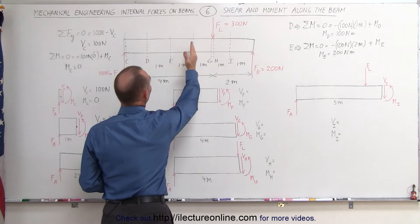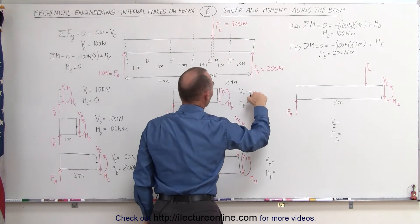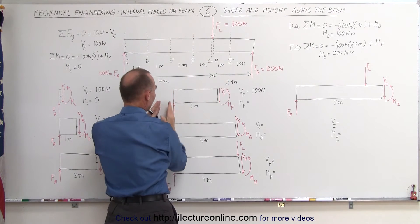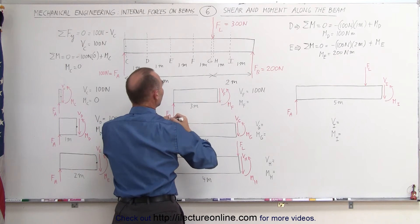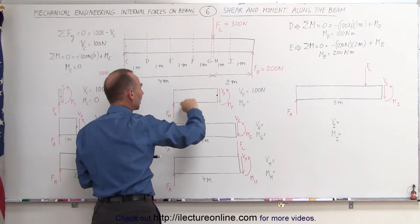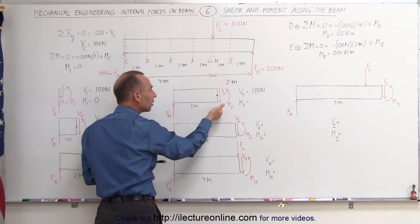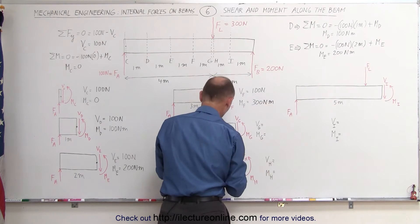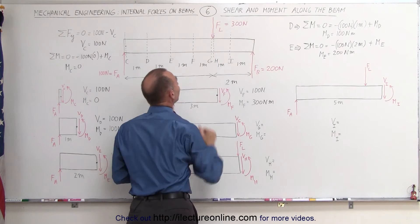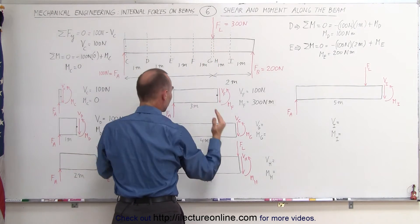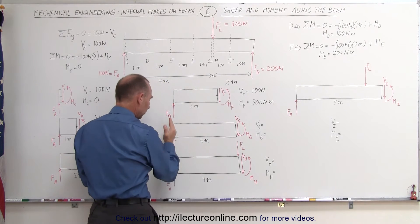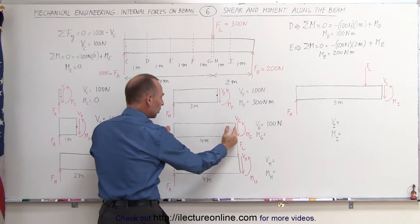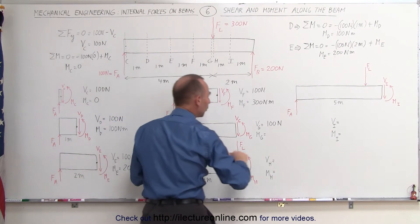Continuing, taking the section out to F at three meters from the left side, V sub F is still 100 newtons — the shear force counterbalances the reaction force at A. The moment here is 100 newtons times three meters, which is 300 newton meters, counterbalanced by the internal moment inside the beam. The next section, just prior to where the load is acting at four meters, gives a shear force at G of 100 newtons and a moment of 100 newtons times four meters, which is 400 newton meters.